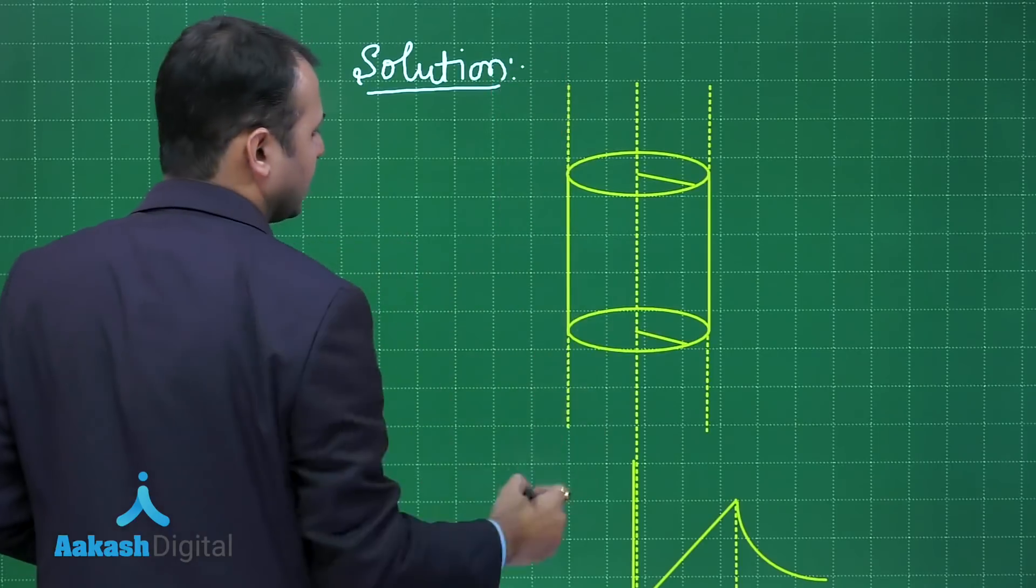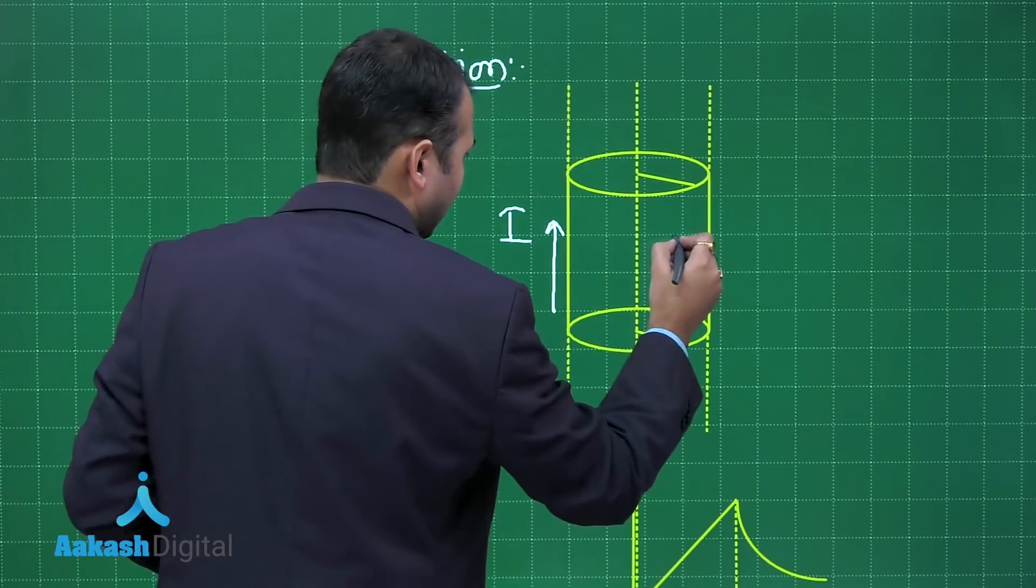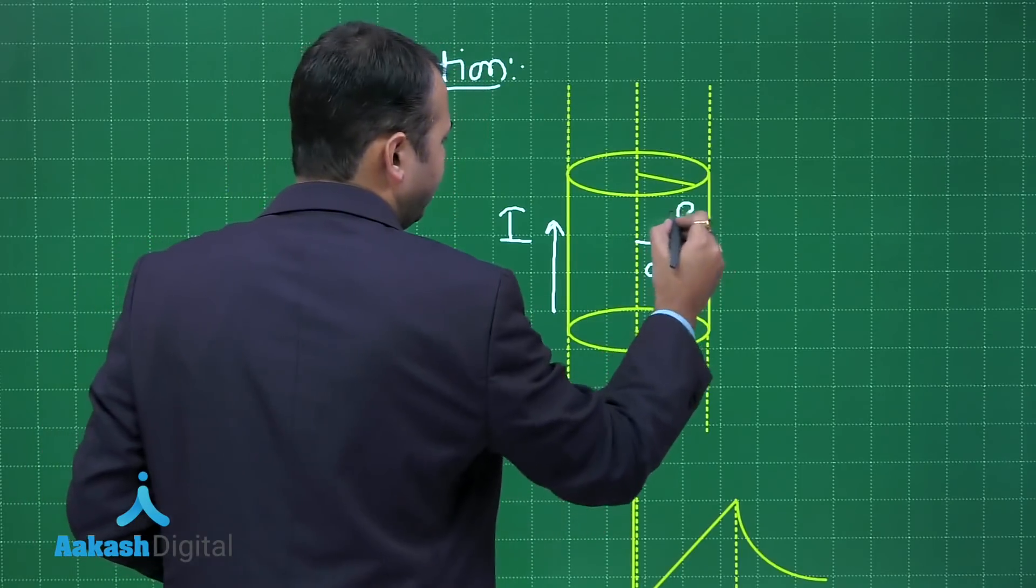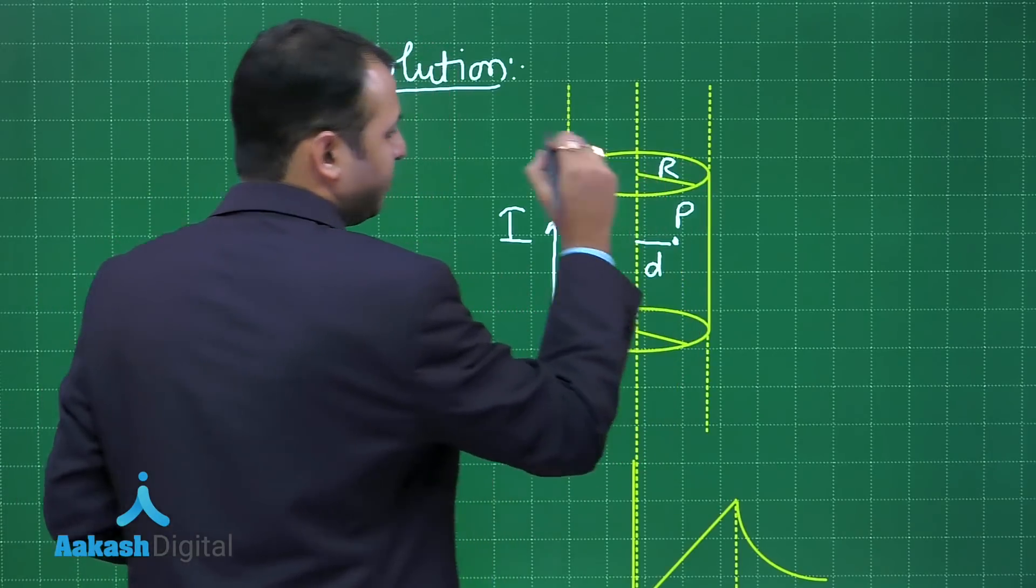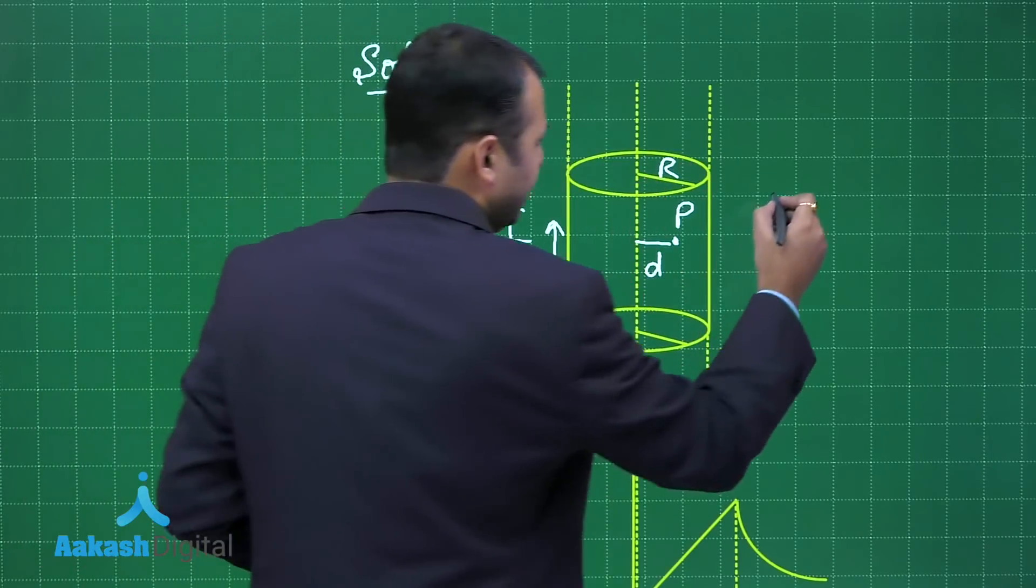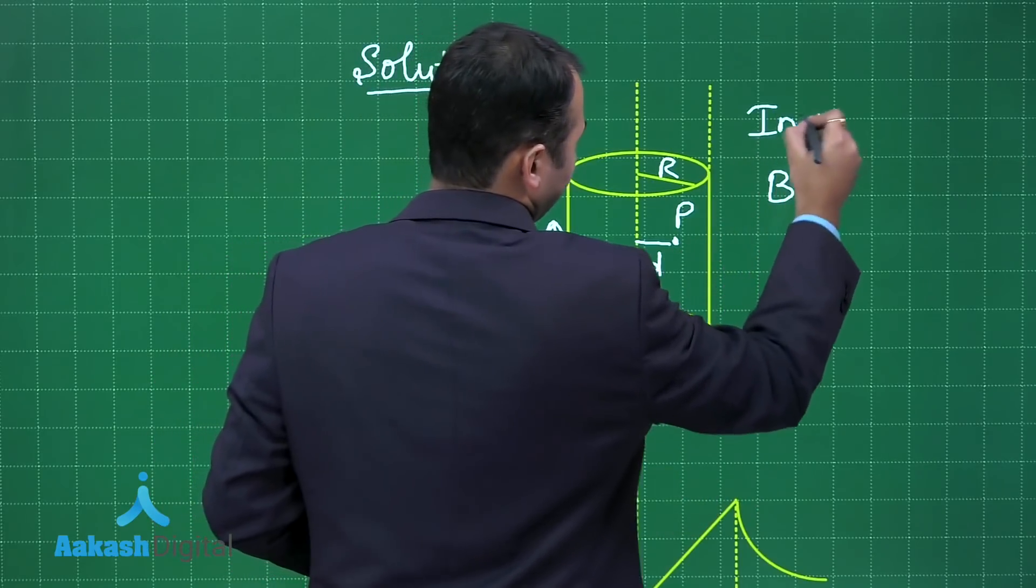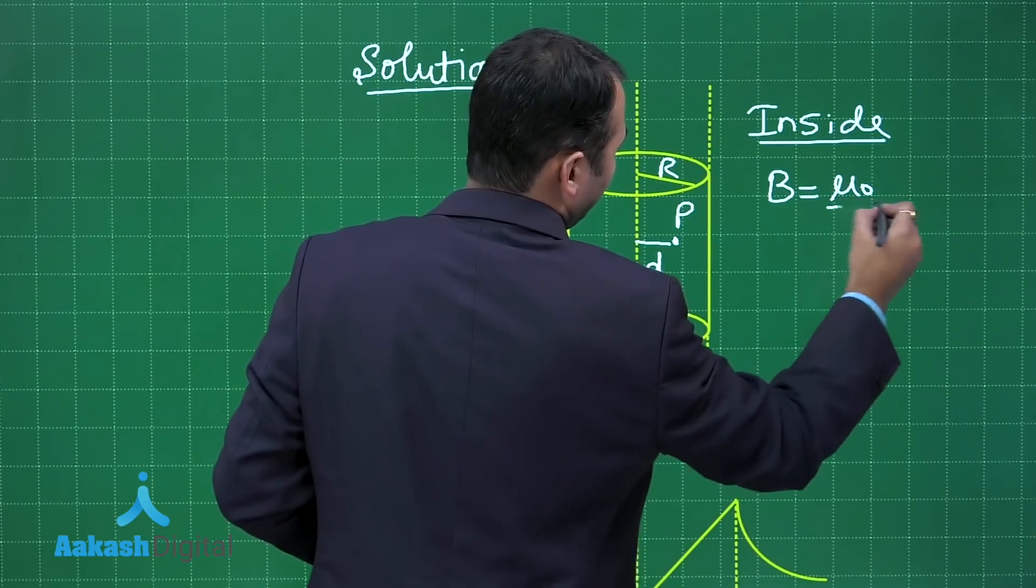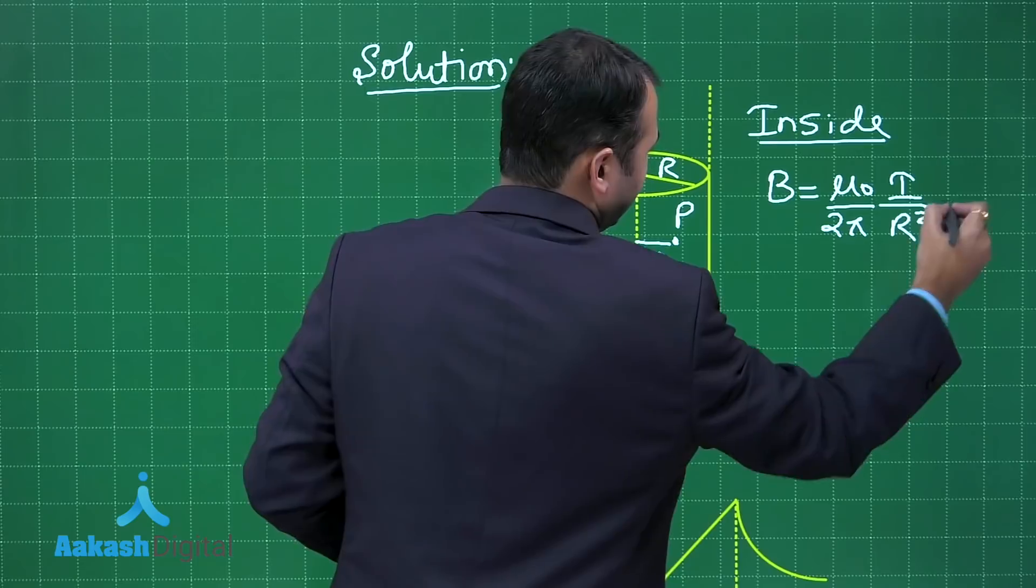So this is the circular conductor in which the current is moving in upward direction. Let's take a random distance small d from here. This is the point P where we want to find the magnetic field and the radius of this is capital R. So at any point inside the magnetic field, let's take at point inside the conductor.